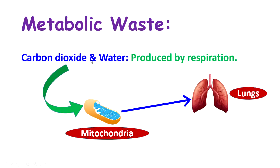Carbon dioxide and water are produced as byproducts from respiration. Respiration is a process by which we produce energy, so the waste products from the production of energy are carbon dioxide and water. Respiration takes place in the mitochondria, and the waste products are excreted through the lungs. So carbon dioxide and water will be excreted through the lungs.